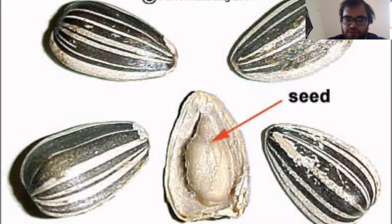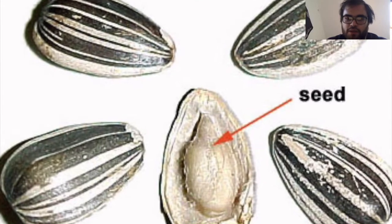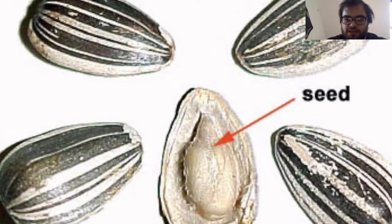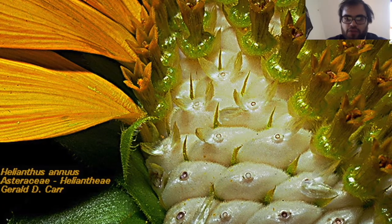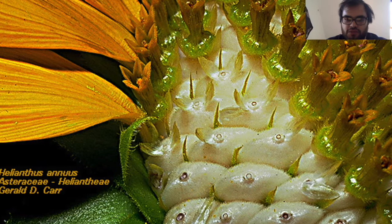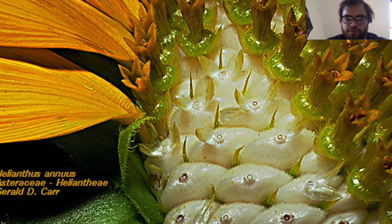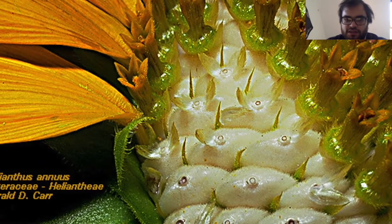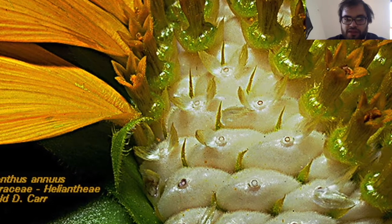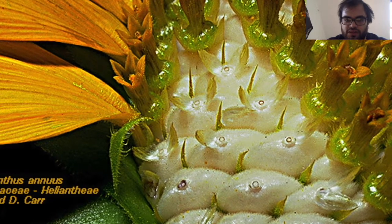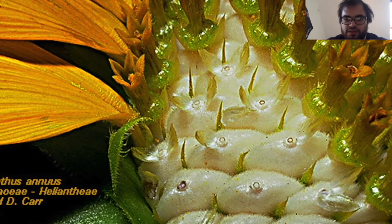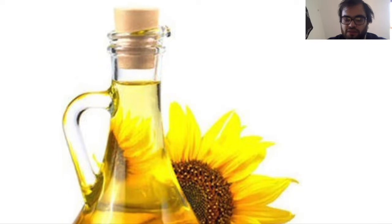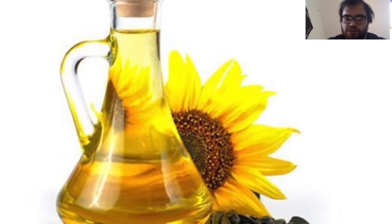Where do sunflower seeds come from? When each tiny disc flower gets pollinated, its ovary produces a single seed. Because there are many disc flowers in a sunflower head, a single sunflower head can produce many sunflower seeds. Sunflower seeds can be eaten as snacks or get pressed into sunflower oil, which is often used to fry french fries.